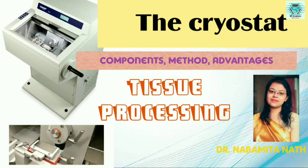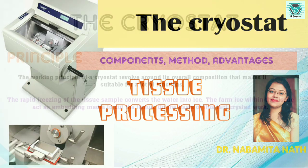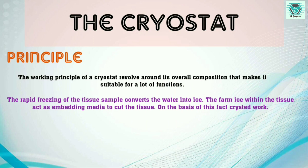Hello students, welcome to Academia. Today our discussion is on the cryostat. A cryostat is a special microtome. In the discussion of microtomes, we have seen that there are different varieties of microtomes. Among them, the cryostat is a kind of microtome which is used for cutting frozen sections. The cryostat is used for tissues at low temperature, typically around minus